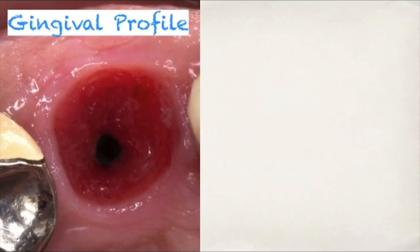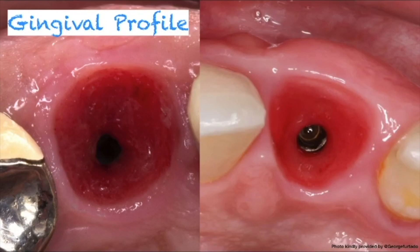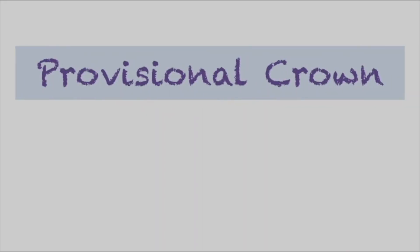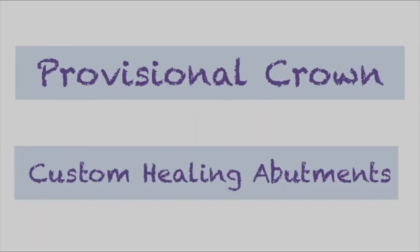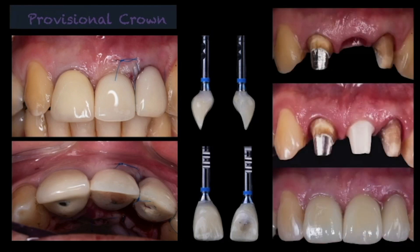When we talk about perimplantar gingival profile, it can be achieved in two different ways: with provisional crowns and with custom healing abutments. In the case of provisional crowns, they are more suitable for anterior areas with aesthetic appeal, where we must condition the gingival tissue to give back their natural features, such as the papilla.